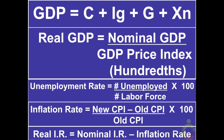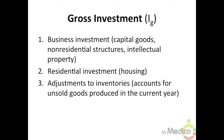The four components to a nation's gross domestic product or GDP are: consumer expenditures (what households buy), gross investment expenditures (what businesses buy), government expenditures (what the government buys), and net export expenditures (what we export minus what we import). The GDP accounts for the production of goods and services within a country's borders in one year. There are three components to gross investment: 1) business investment, including capital goods, non-residential structures, and intellectual property; 2) residential investment, such as housing; and 3) adjustment to inventories, which accounts for unsold goods produced in the current year.